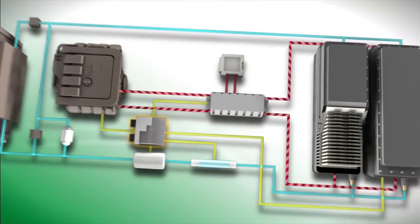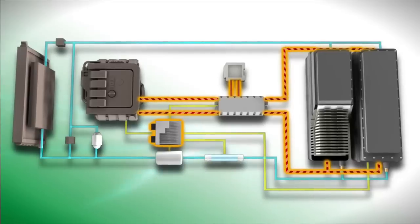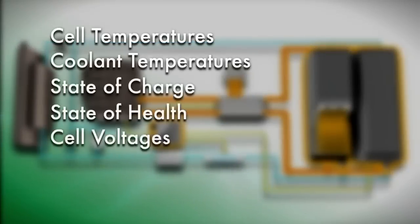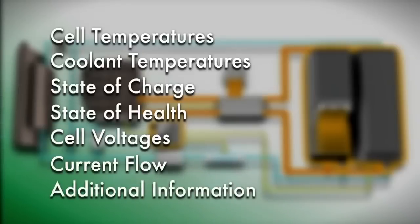During vehicle usage, the digital vehicle management system is constantly accessing many aspects of the system including cell temperatures, coolant temperatures, state of charge, state of health, cell voltages, current flow, and many other variables.